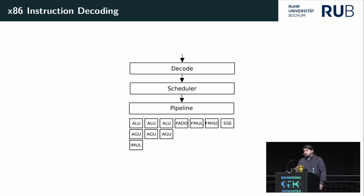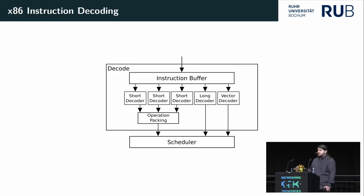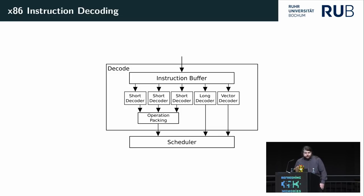An x86 CPU takes multiple steps to execute an instruction. The first step is decoding the x86 instruction into multiple smaller micro-ops, which are then scheduled into the pipeline and dispatched to functional units like the ALU, AGU, and Multiplication/Division units. In the decode step, there are short decoders for simple instructions, a long decoder for more advanced ones, and a vector decoder that handles the most complex instructions with the help of microcode.